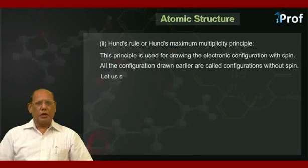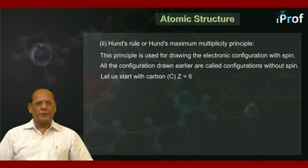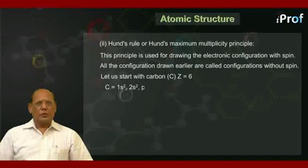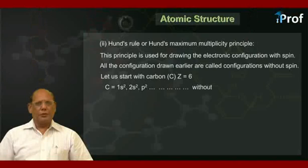Let us start with carbon. Z equals 6. Its configuration is 1s², 2s², p² without spin.